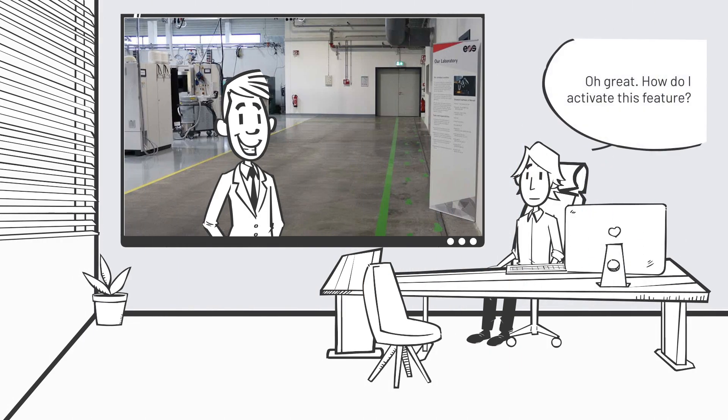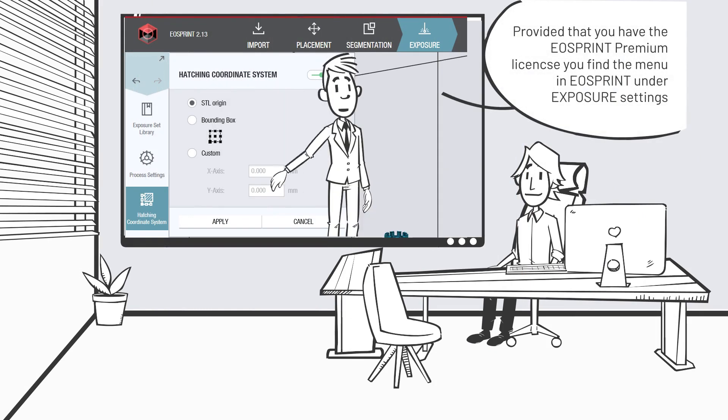Oh great. How do I activate this feature? Provided that you have the EOSprint premium license, you find the menu in EOSprint under exposure settings.